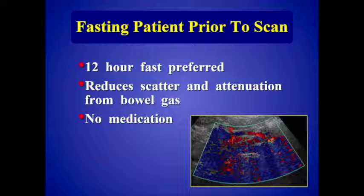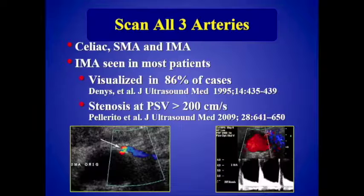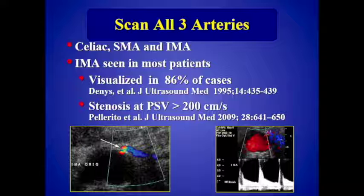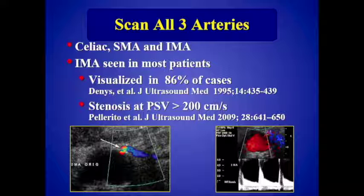Number two: scan all three arteries. To make the diagnosis of chronic mesenteric ischemia, you have to find disease in at least two of the three vessels. So look for the IMA — studies have shown you can see the IMA in most patients, particularly when they're fasting. We use a velocity cutoff of 200 cm/s for the IMA.